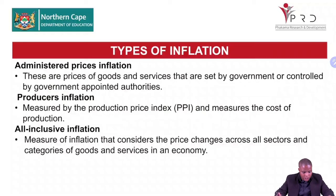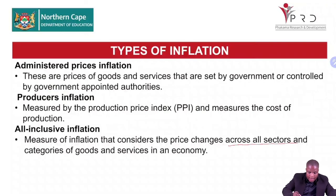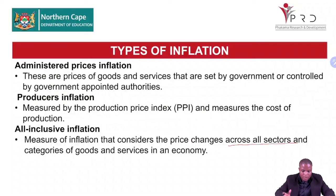Administered prices inflation covers goods and services whose prices are set by the government or controlled by government-appointed authorities — such as taxes, water, and electricity. Producer inflation is measured by the Producer Price Index and measures the cost of production. All-inclusive inflation measures price changes across all sectors and all categories of goods and services — it includes everything reported in the CPI.